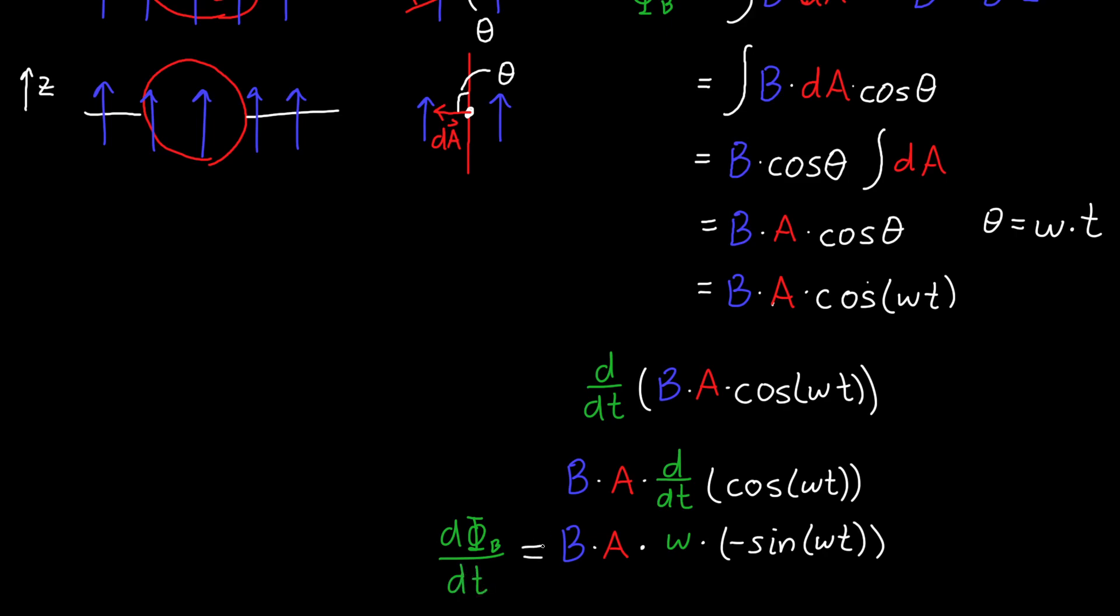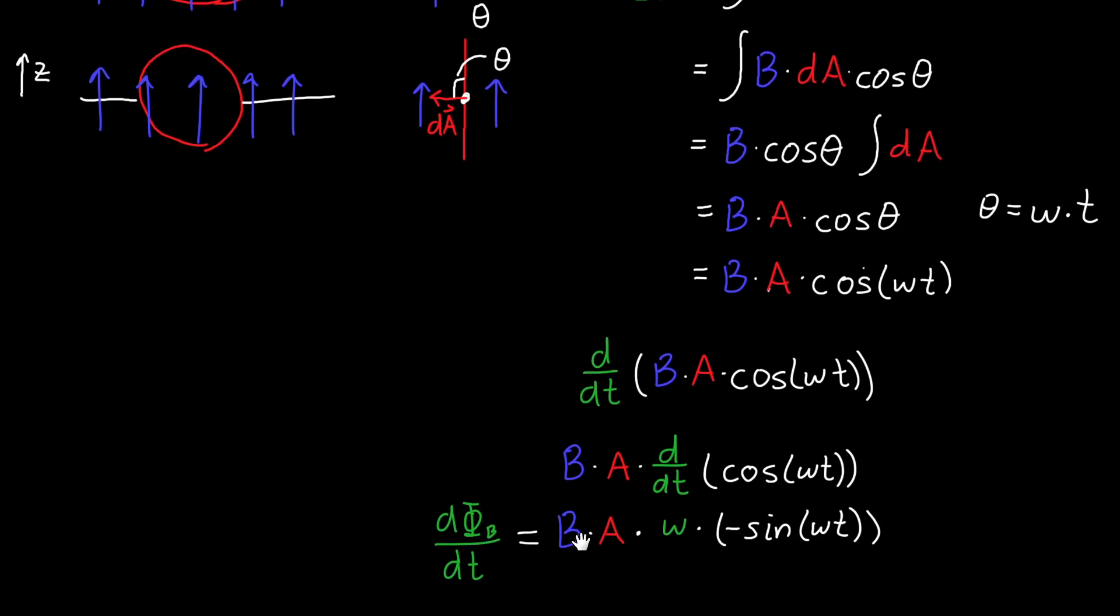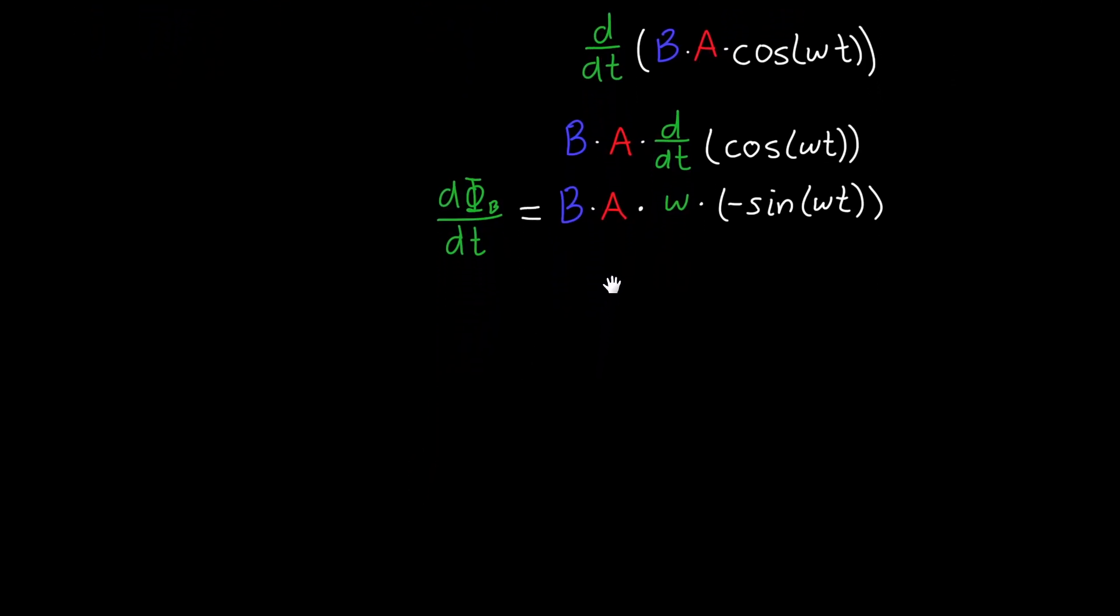So that's great. We are almost done with this problem. All we need to do now is set this equal to the negative or set the EMF. So if we've got our loop, that loop has some finite resistance. And really the resistance is distributed all over the loop, but I'm just drawing it as a single lumped piece here.